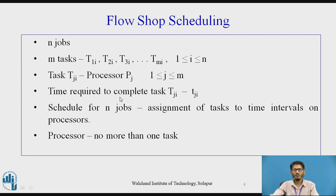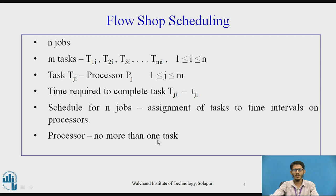The time required to complete the task tji is small tji. We are expected to schedule these n jobs, and scheduling is nothing but the assignment of tasks to time intervals on processors. The basic condition is that on a processor, no more than one task could be executed at the same time.